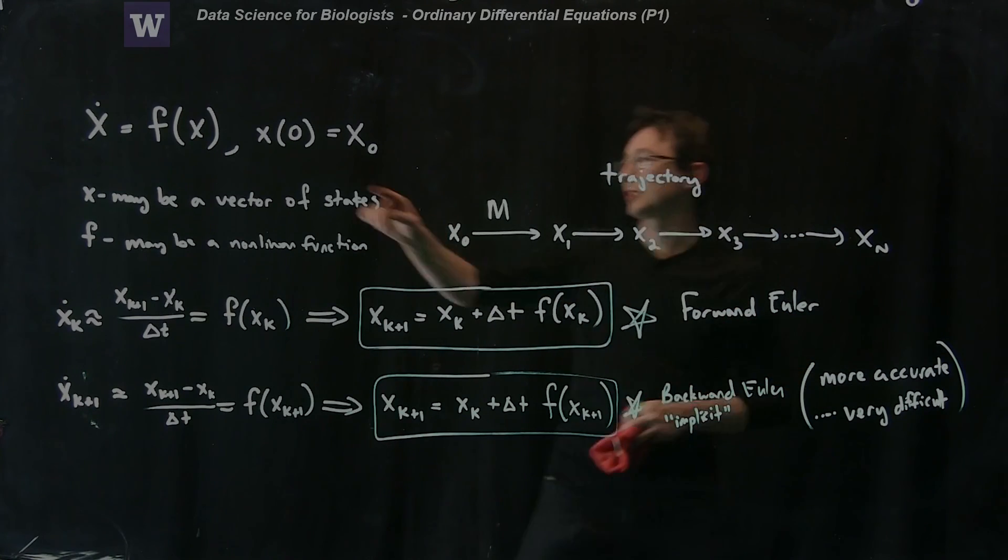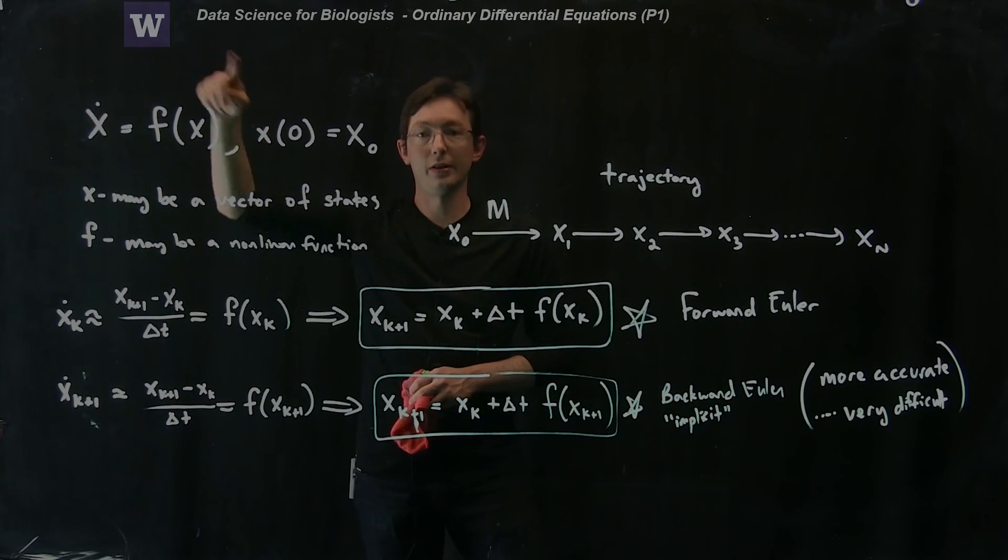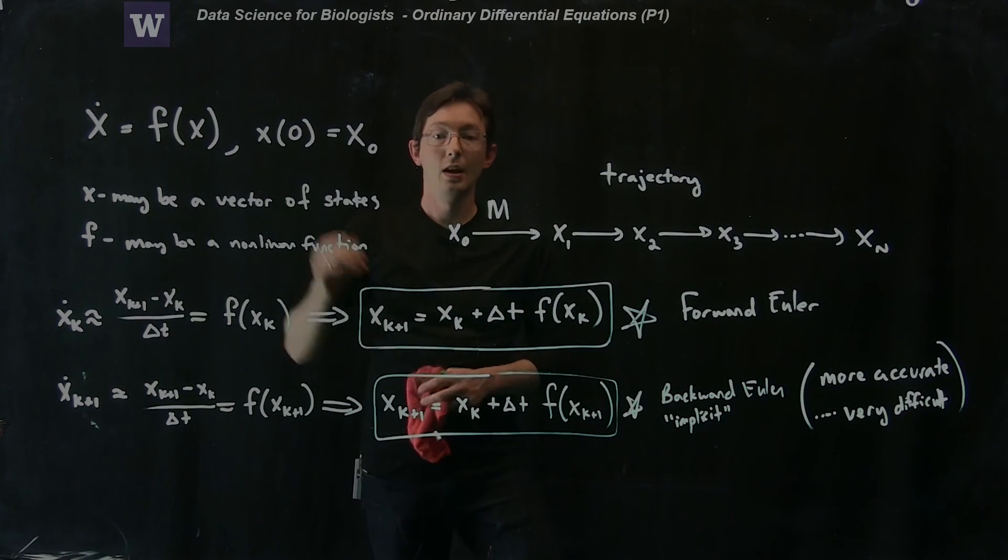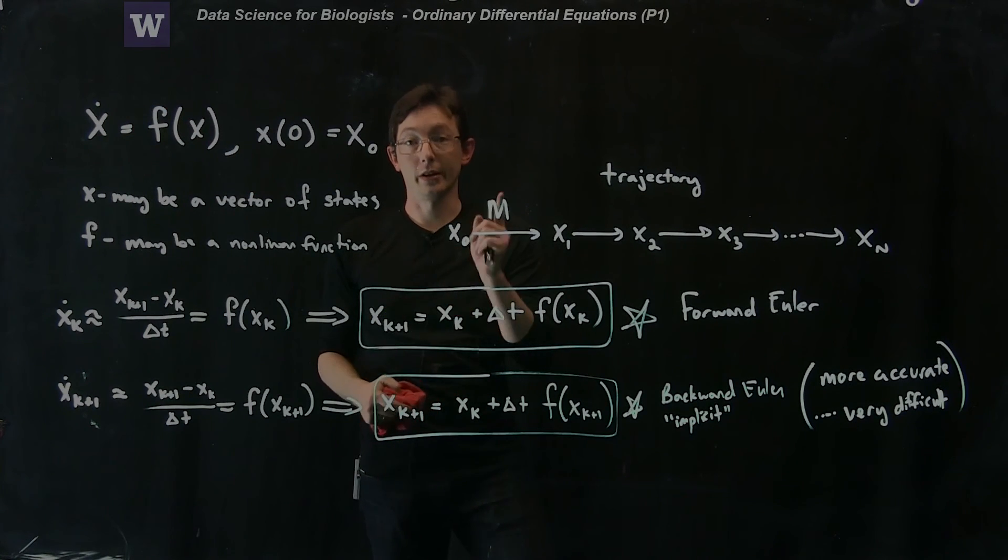So the next thing that we're going to do is actually write down a specific differential equation for a population model, and we're going to try out this forward Euler integration scheme.